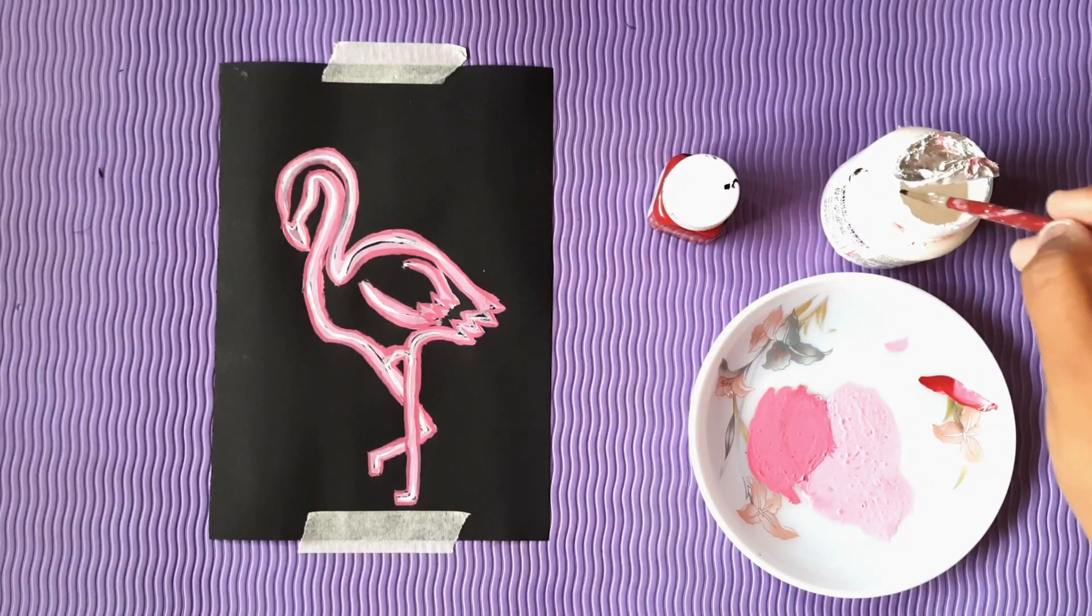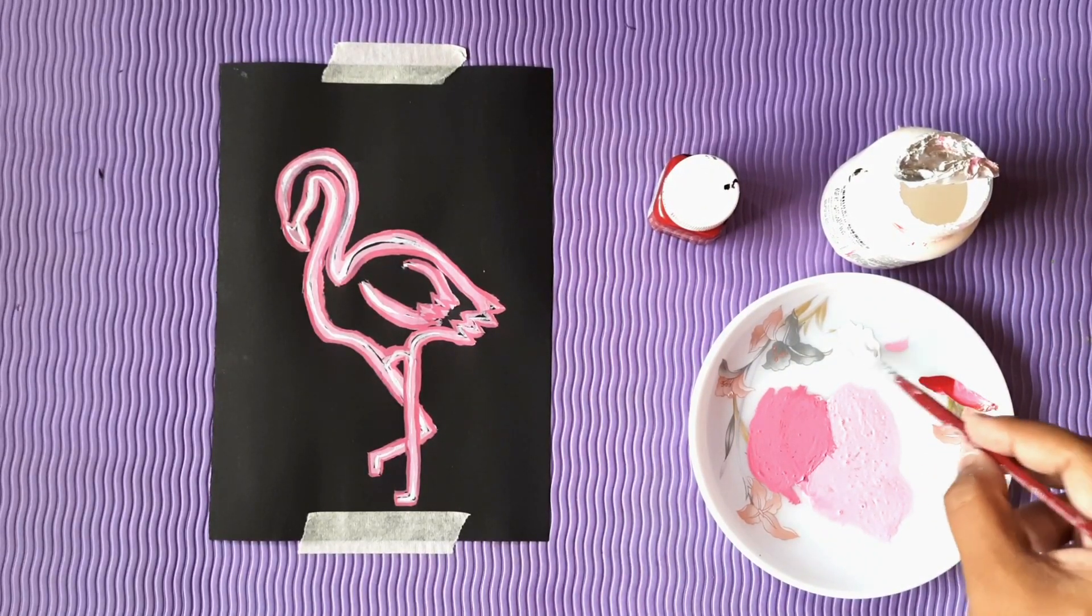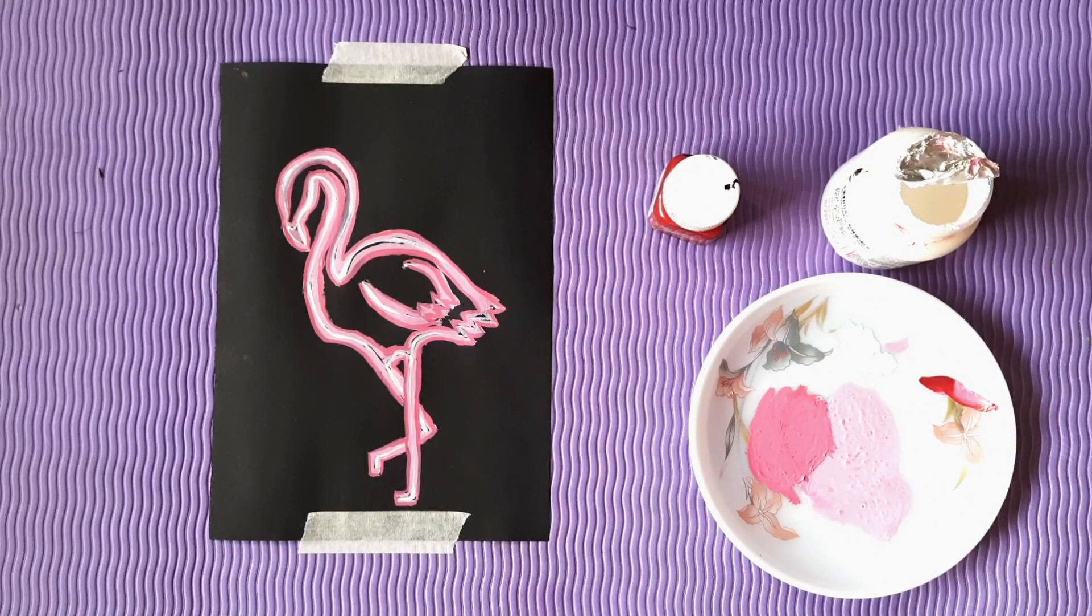Now that everything is done, I will go ahead and do the second coating of white line and soon you will see a neon flamingo.